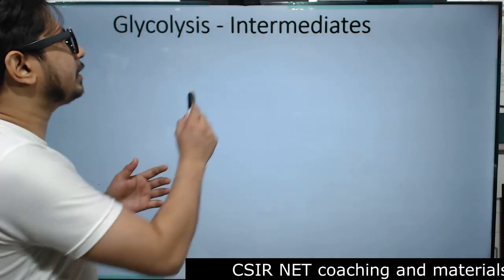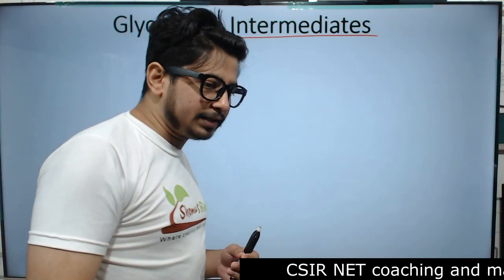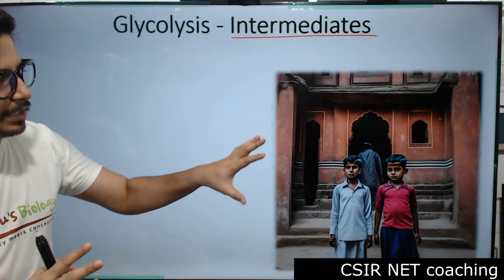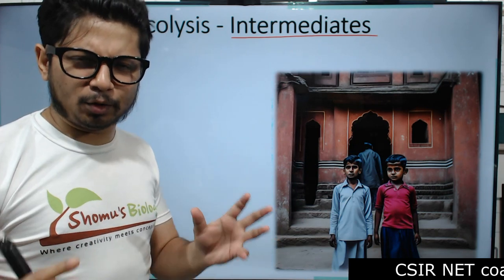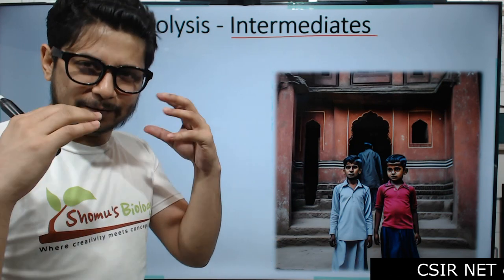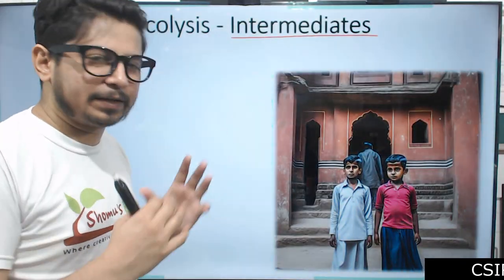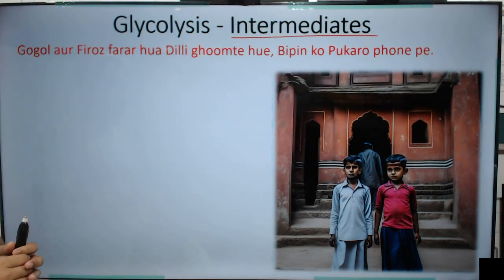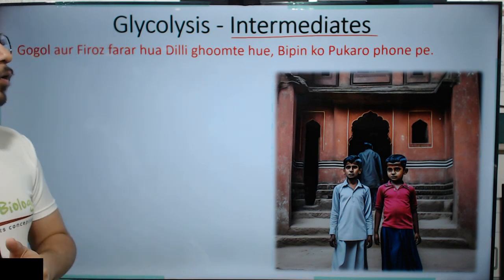Now we move to an even more important point — the intermediates of glycolysis. For that we are going to use another mnemonic. But first I want you to visualize this image: two friends roaming around old city locations in Delhi. That is the brainchild of this idea.